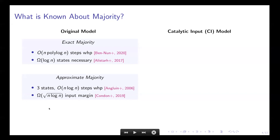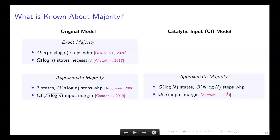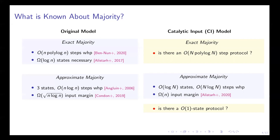Regarding the majority problem in the catalytic input model: a recent result by Alistair et al. in 2020 gave a protocol for approximate majority in the CI model that converged correctly in n log n steps with high probability, but requires log n states per worker agent. In addition, the protocol converged correctly only when the input margin was linear in the number of catalytic input agents. So it remained open whether there is a protocol for exact majority in this model that converges quickly, and also whether there is a constant-state protocol for approximate majority in the CI model, and if so, under what requirements on the input margin.